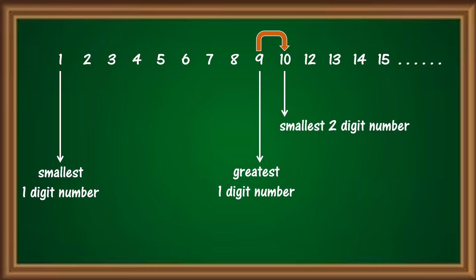After this, in order to get the greatest 2-digit number, do we have to continue writing all the numbers till we get the answer? No, we don't have to do that. There is a simple method that can be used to get all the smallest numbers and the greatest numbers.